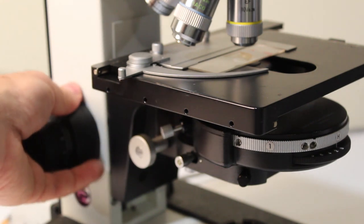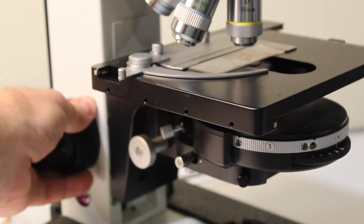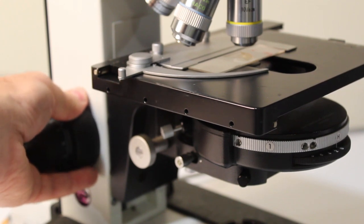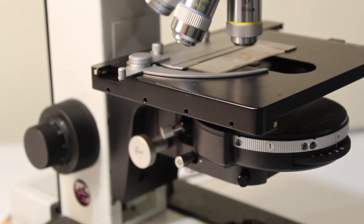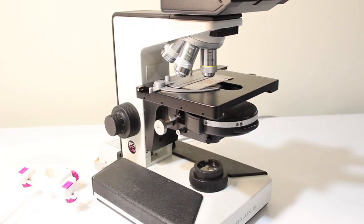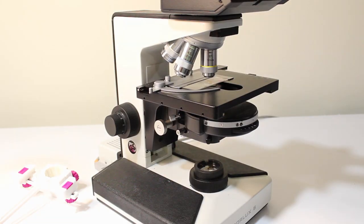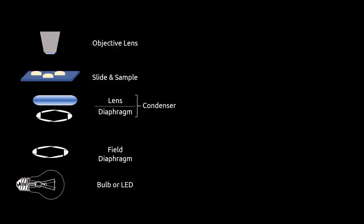The first step is to focus on your sample using your lowest magnification objective lens. If you don't know how to do this, please watch episode 3 of Microbrews. Next, you need to focus the condenser on the field diaphragm. This will ensure that your sample is evenly lit and that the light will efficiently move from the sample to the objective lens.